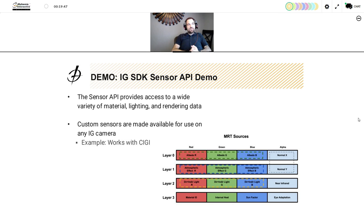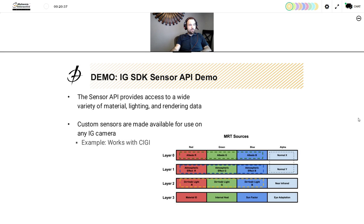The next brief demo is of the IG SDK sensor API. VBS IG SDK provides customers with the ability to create their own custom sensors. Indeed, all of the sensors that ship with VBS Blue IG are already built using the same technology. This sensor API provides access to a wide variety of material, lighting, and rendering data at a very low level within the VBS Blue engine. Custom sensors are made available for use on any IG camera. The types of information available include normal X and Y, infrared, sun, internal heat, material ID, lighting, albedo, and atmospheric effects.